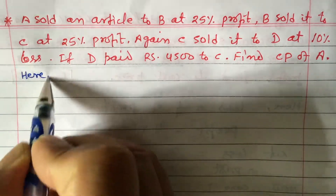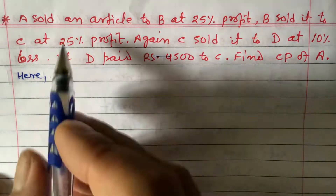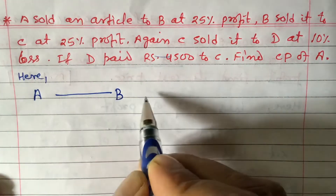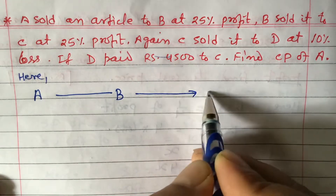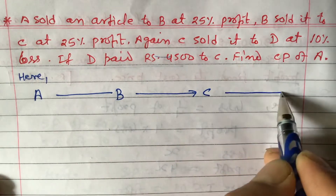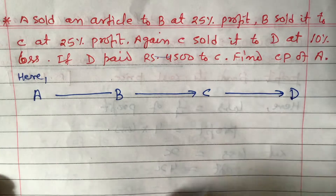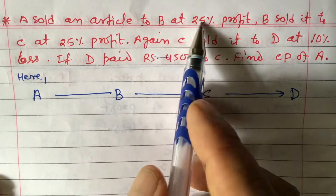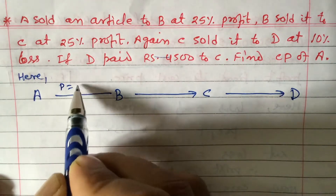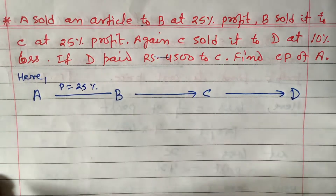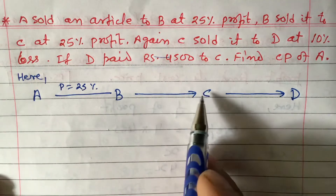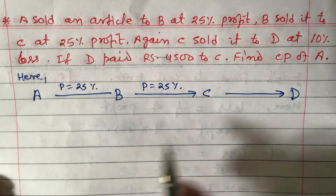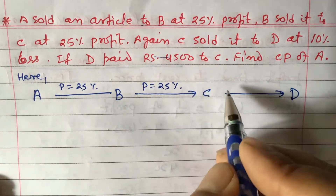We can summarize the question like this: A sold an article to B at 25% profit, so profit = 25%. B sold to C at 25% profit, so profit = 25%. C sold to D at a loss, so loss = 10%.